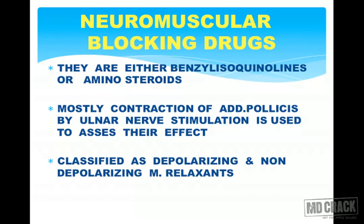To judge the action of a muscle relaxant, it is assessed on the adductor pollicis muscle by stimulation of the ulnar nerve. This is used to determine whether the action of the muscle relaxant is complete or incomplete.